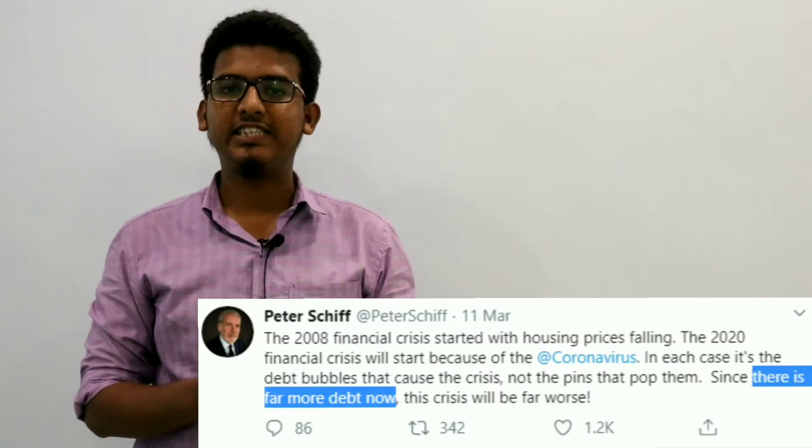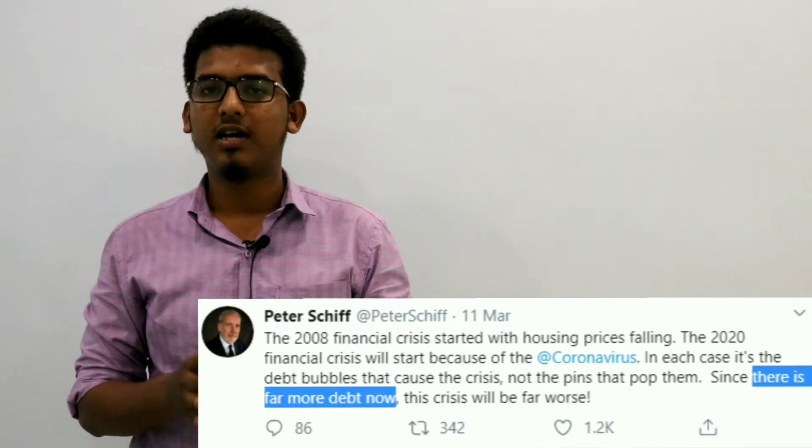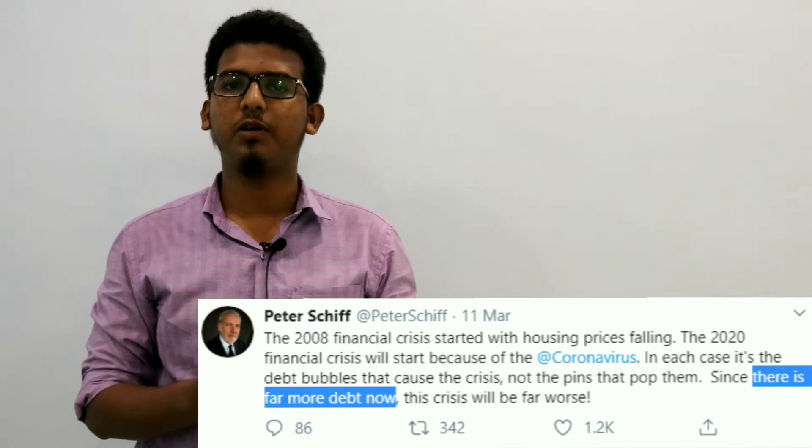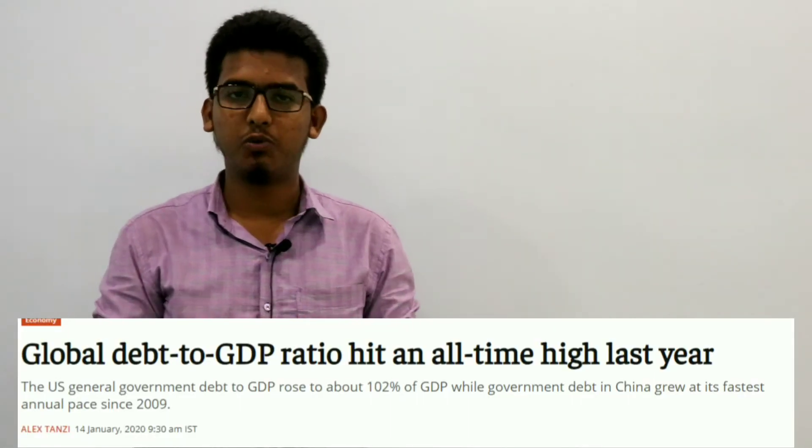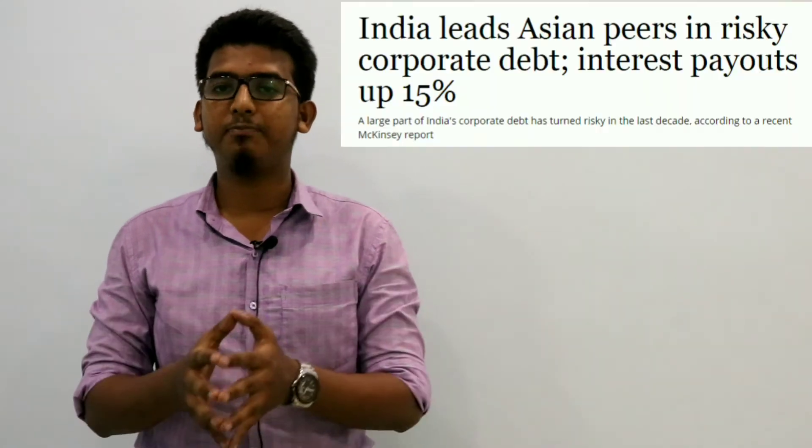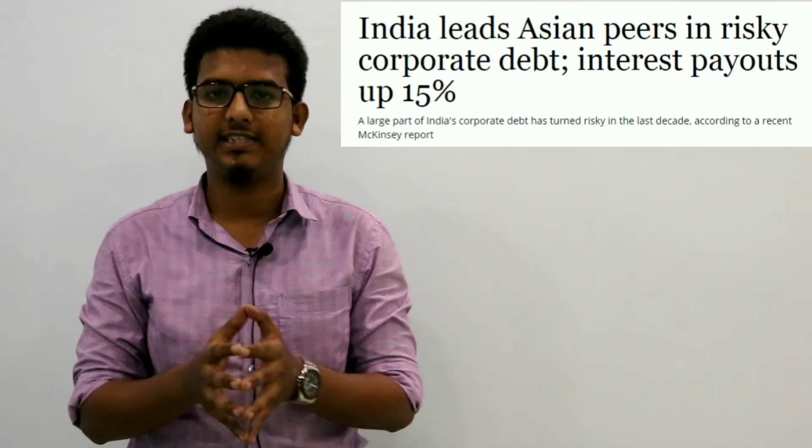Peter Schiff, CEO of Euro Pacific Capital, writes a tweet claiming that this recession will be worse than the 2008 recession since there is far more debt now. And yes, indeed the corporate debt to GDP ratio reached an all-time high last year for the U.S., and India as well leads its Asian peers in risky corporate debts.